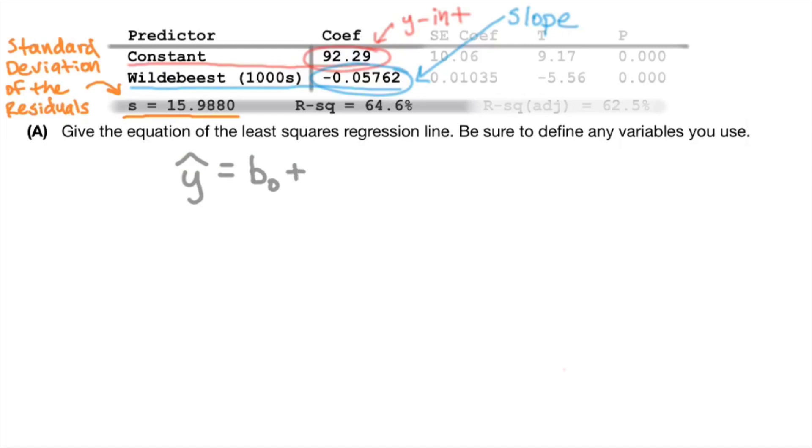As a reminder, the form of the linear equation we're going to use is y-hat equals our y-intercept plus our slope times x. The y-intercept could be b null or a. The slope might be referred to as b1 or b, depending upon in AP stats, whether you're looking at the formula sheet or your calculator or your textbook.